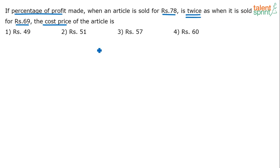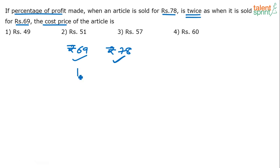There are two situations: one is when the article was sold for rupees 69, and the other when sold for rupees 78. The profit made when sold for 78 is two times the profit made when sold for 69. So if the profit made in one case is p, the profit in the other is 2p. Since the percentage of profit is twice, the actual absolute profit is also twice.